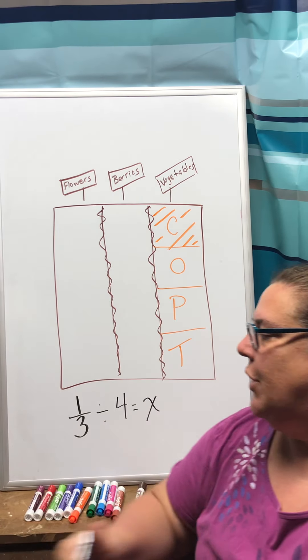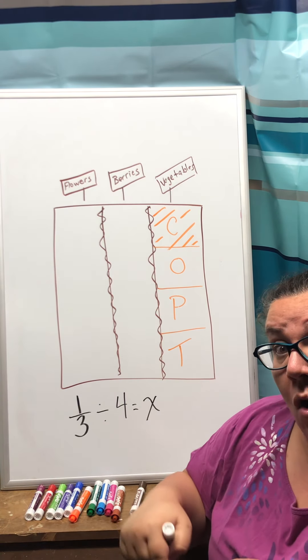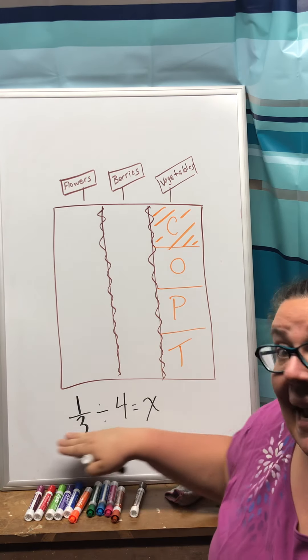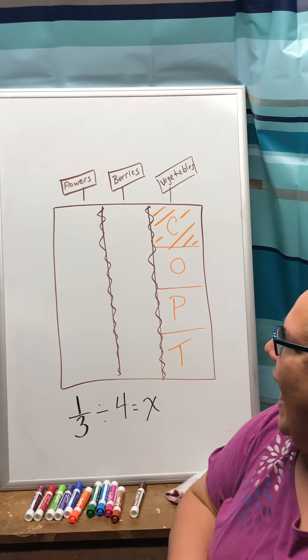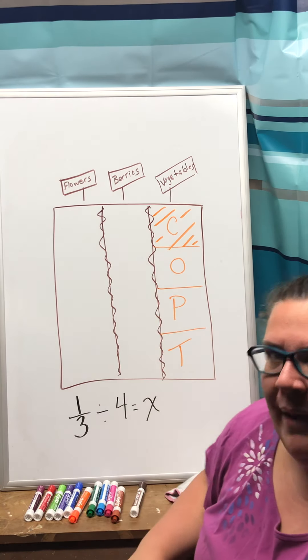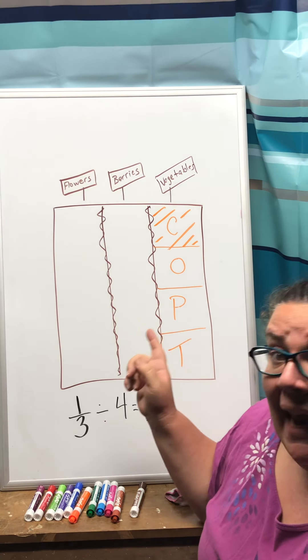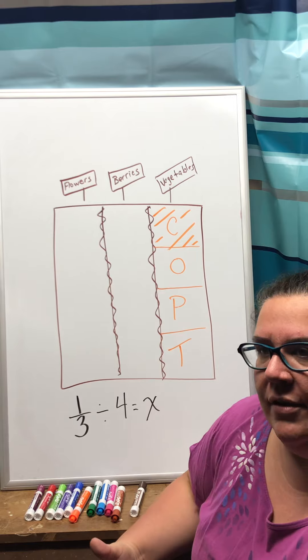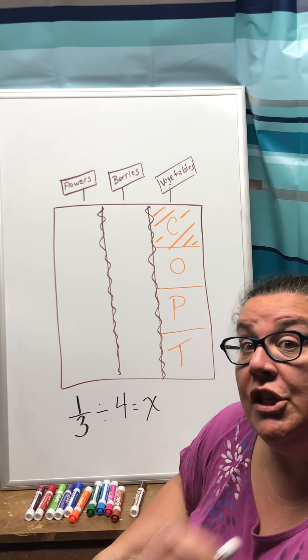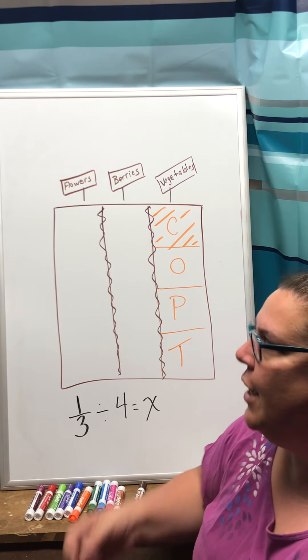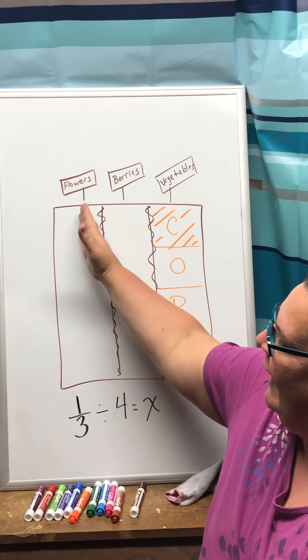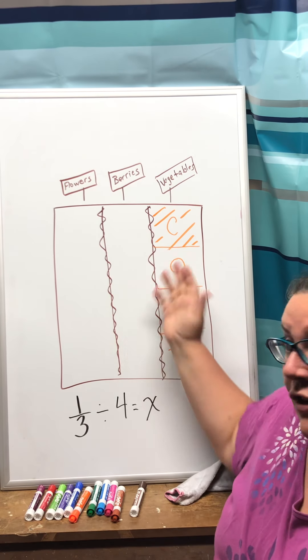Okay so again this goes back to the look back also because the look back is asking me for a number model and my actual garden picture that I'm going to use. So again I know that it can't be a fourth so it has to be a different fraction and it actually has to be a smaller fraction than a fourth because a fourth would mean if I cut the entire garden into four pieces.